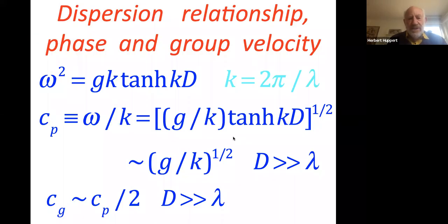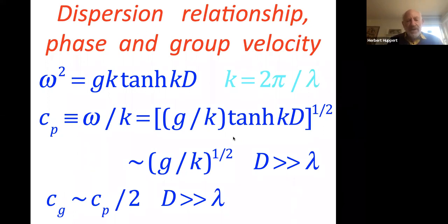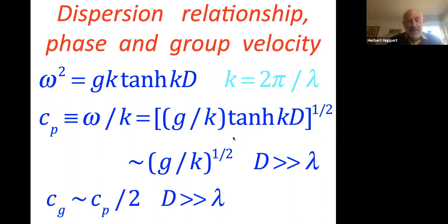When you look into the linear theory — writing down the Bernoulli equation at the free surface and the high-Reynolds-number formulation because viscosity doesn't play a role in the interior — you get a dispersion relationship which relates the frequency omega and the wavelength lambda, where two pi over lambda is given as the wave number k. That relationship is: omega squared equals gk tanh(kd), where d is the depth of the ocean and g is gravity.